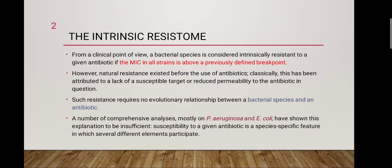Let's take the example of mycoplasma. We know that there is no cell wall in mycoplasma, so if we use an antibiotic which is a cell wall inhibitor, it does not show activity against that bacterial species because there is a lack of susceptible target. However, comprehensive analyses on Pseudomonas aeruginosa and E. coli have shown that this explanation is insufficient, because susceptibility to a given antibiotic is a species-specific feature in which several different elements participate.